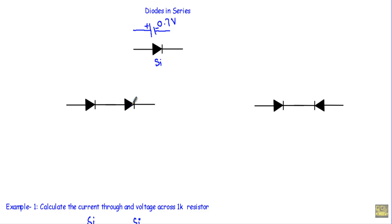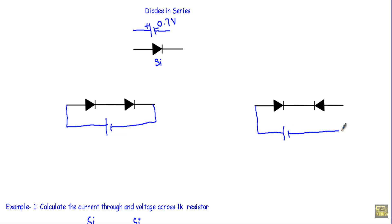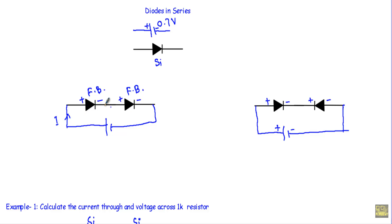Now look at these circuit structures where diodes are connected in series in a back-to-back configuration. If I apply a positive bias voltage, the positive terminal will be connected with the P side of the first diode and the P side of the second diode, while the negative terminal connects to the N side of both diodes. That means both diodes will be in forward bias, so we will get current in this circuit.